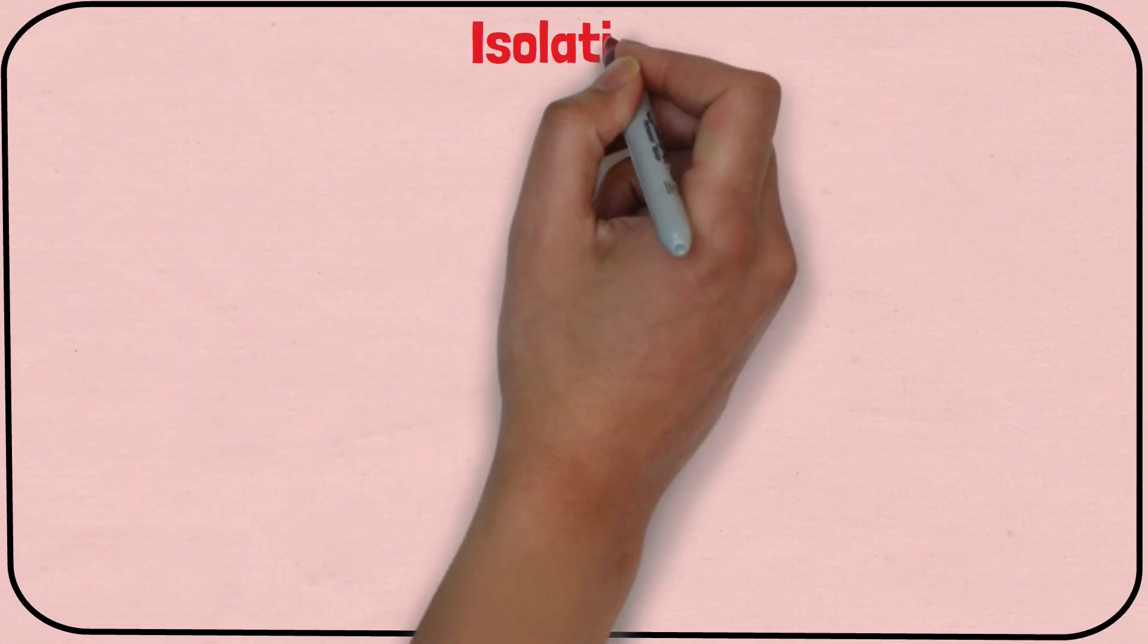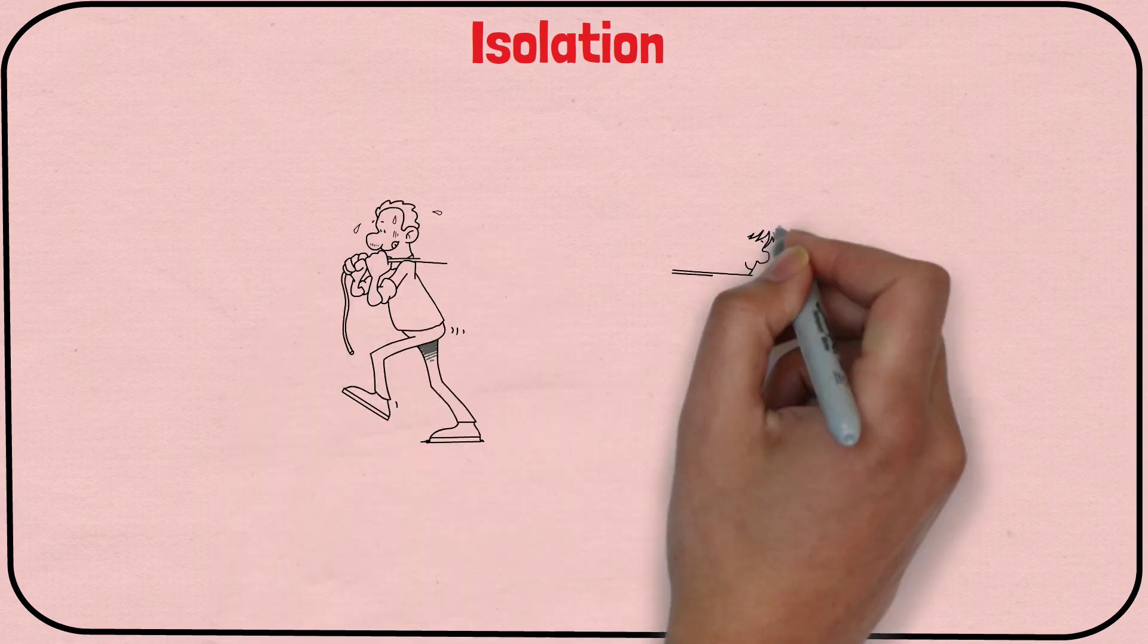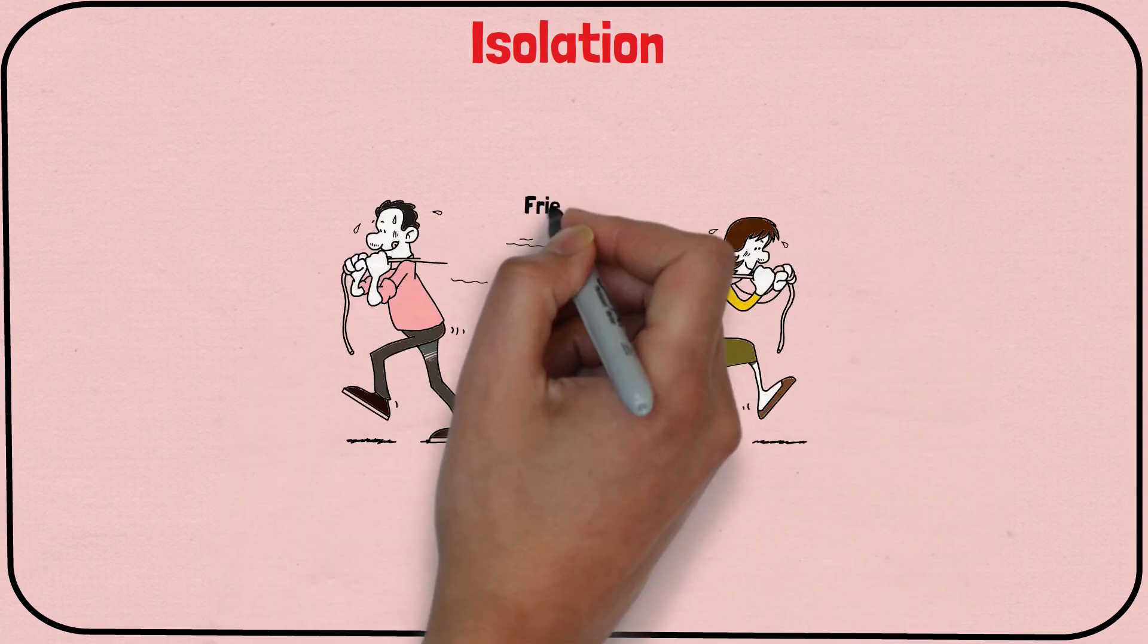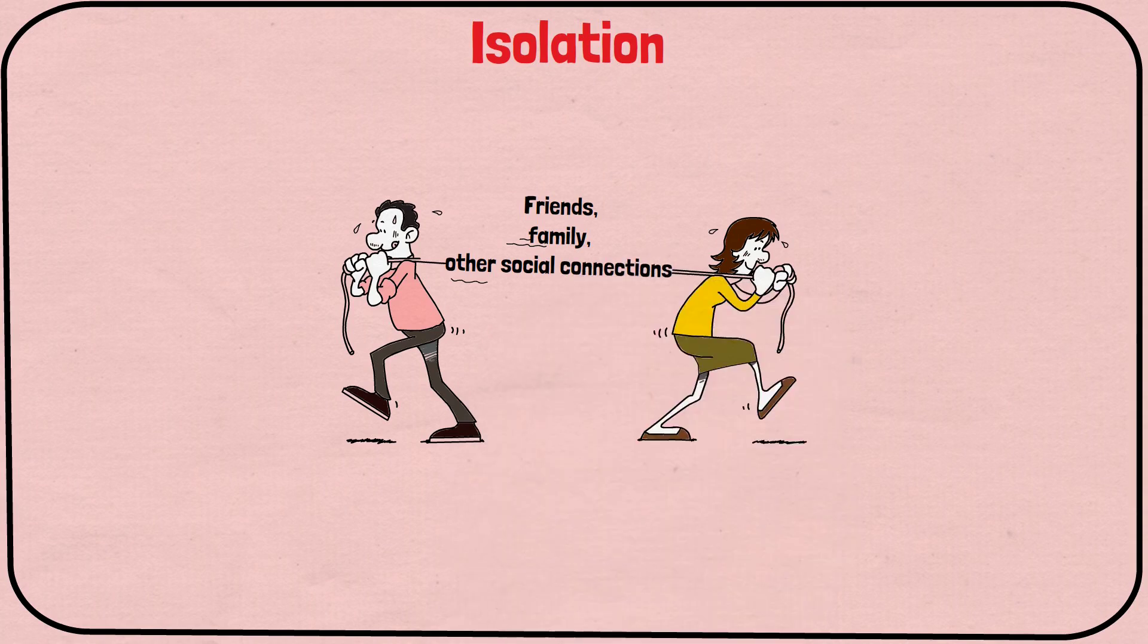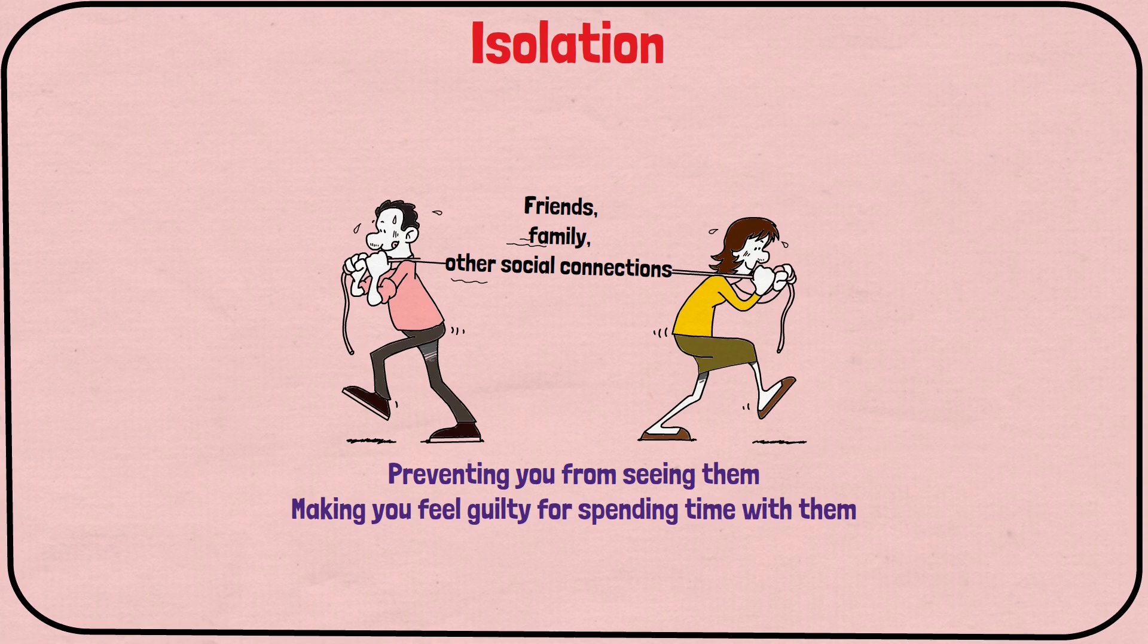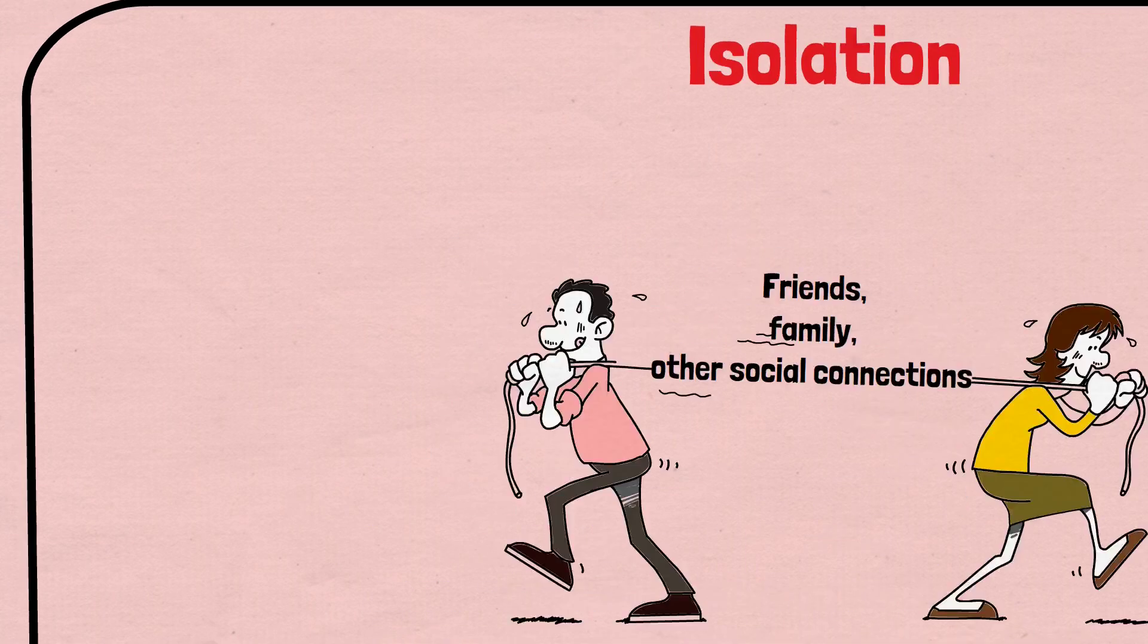Next is isolation, which is essentially when your partner is trying to cut you off from your friends, family, and other social connections. This can include preventing you from seeing them, making you feel guilty for spending time with them, or belittling and criticizing those close to you. It's a red flag because of how important it is to have a support system outside of your relationship.